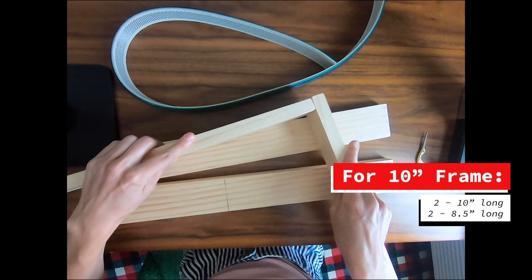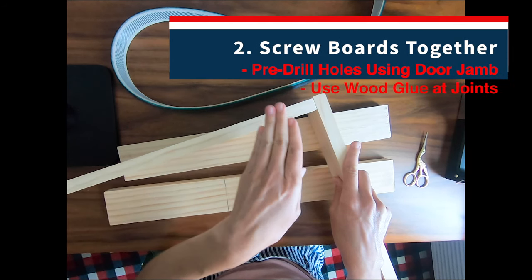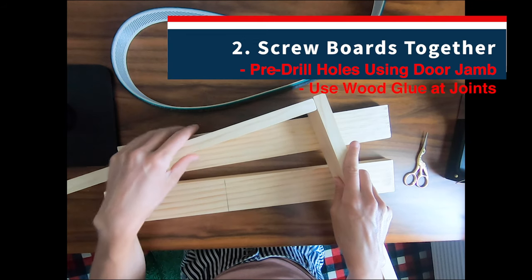The longer pieces of wood will go on the outside of the inner so that this one will fit inside the middle of the two longer pieces of wood.